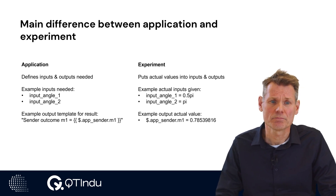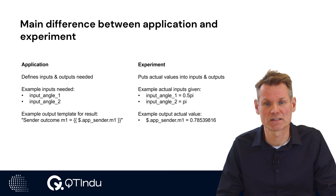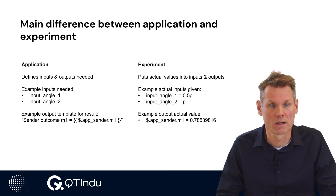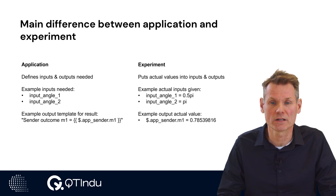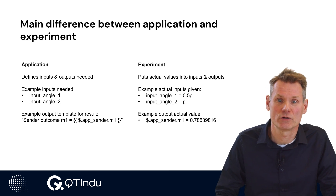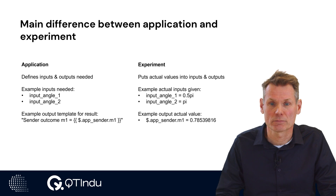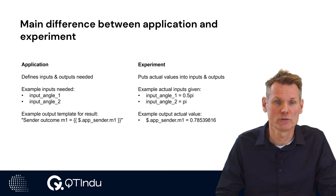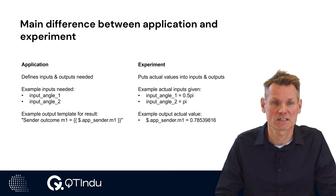Said differently, the application defines the fixed part; the experiment adds the variable part. The application files and the experiment inputs are fed to the simulator running the experiment, giving results which are fed back to the user. How the experiment results are presented to the user is defined or configured by the application. The actual result values that may change for each experiment run are part of the experiment.